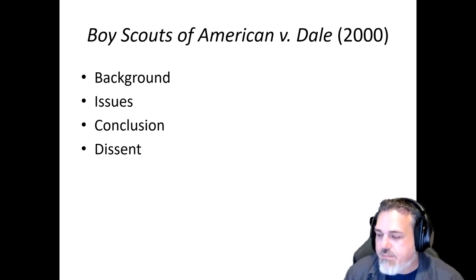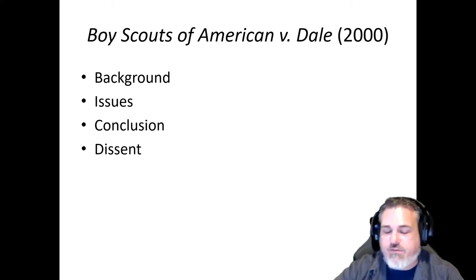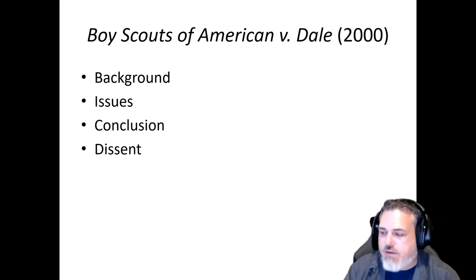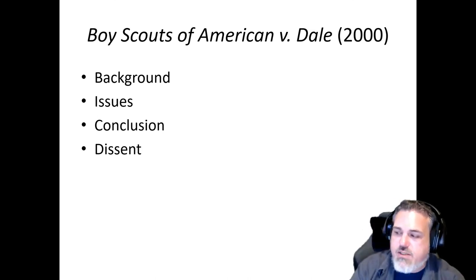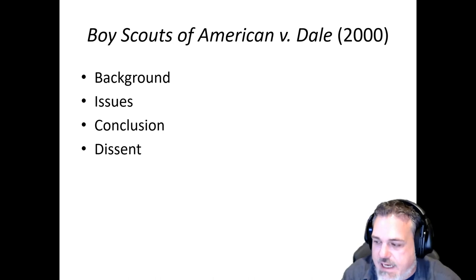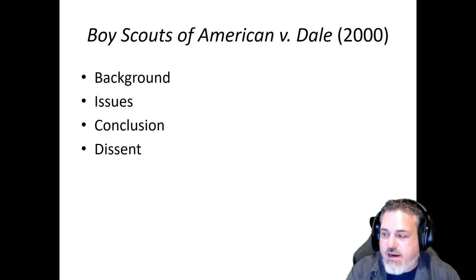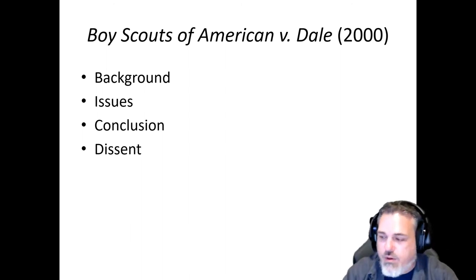This is not a very persuasive argument by Stevens. However, he ends with a prescient statement, especially for the year 2000: unfavorable opinions about homosexuals have ancient roots, but interaction with real people — rather than mere adherence to traditional ways of thinking — has modified these opinions. Such prejudices are still prevalent and have caused serious and tangible harm to countless members of the class New Jersey seeks to protect, which are established matters of fact that neither the Boy Scouts nor the Court disputes.